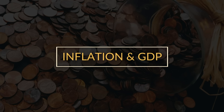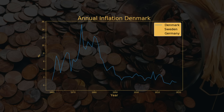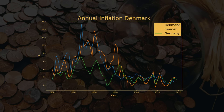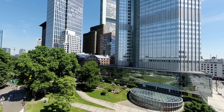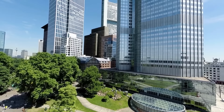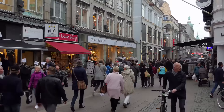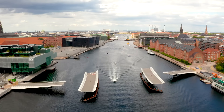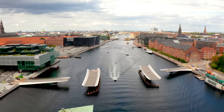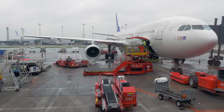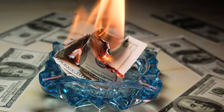Even though the central bank doesn't target inflation, it has been remarkably stable in Denmark, and also very similar to that of neighboring countries. Check out this graph of inflation in Denmark, Sweden, and Germany — inflation has been trending downwards everywhere. This has been quite a puzzle for central banks, since their favorite theory of inflation implies that a growing economy with low unemployment should produce lots of inflation. Weirdly enough, GDP has been growing, Denmark is one of the richest countries in the world, and unemployment is at a record low, and yet inflation has remained stubbornly low.